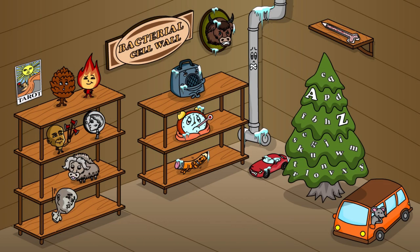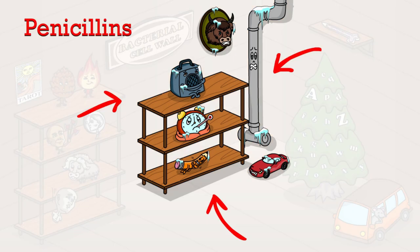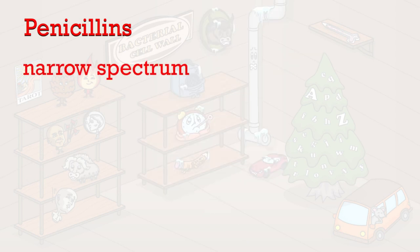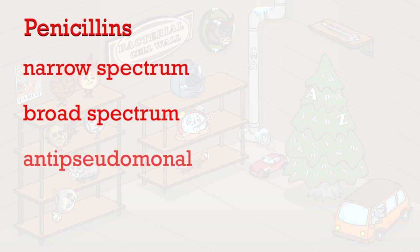Today, we will be looking at six different penicillin-based antibiotics. To remember which characters they represent, just remember that the penicillins are chillin'. Penicillin medications are split into narrow spectrum, broad spectrum, and anti-pseudomonal classes.